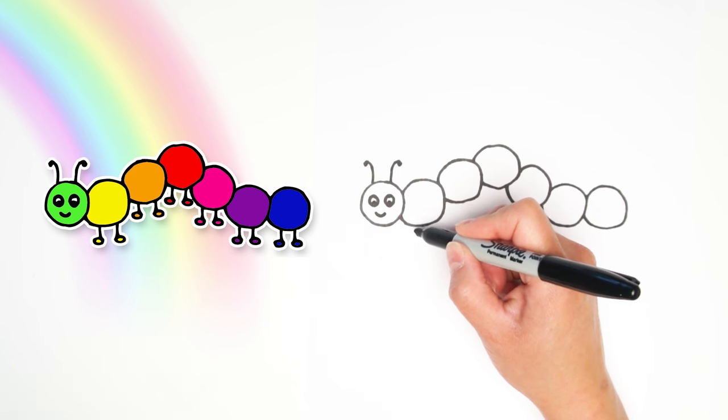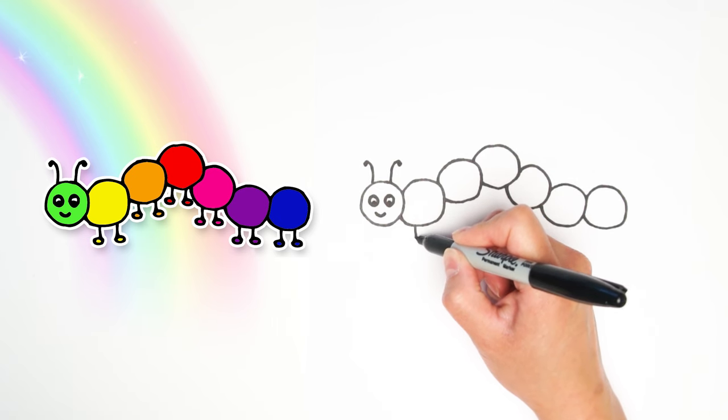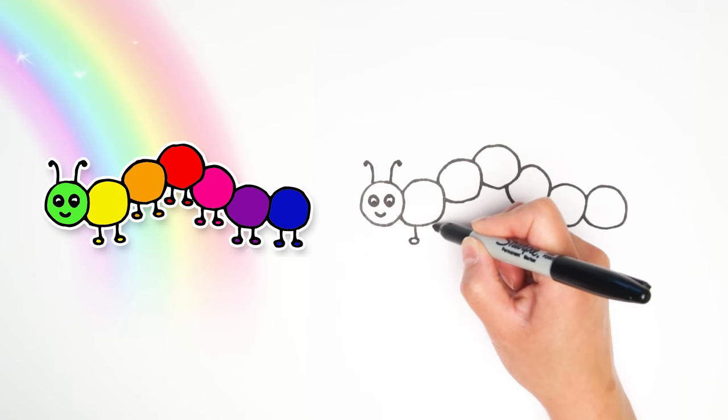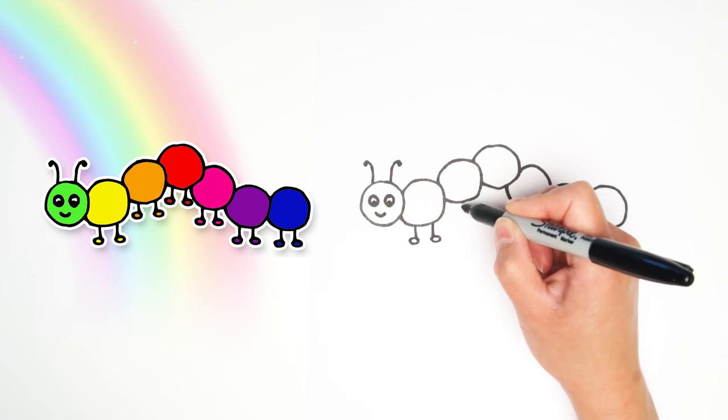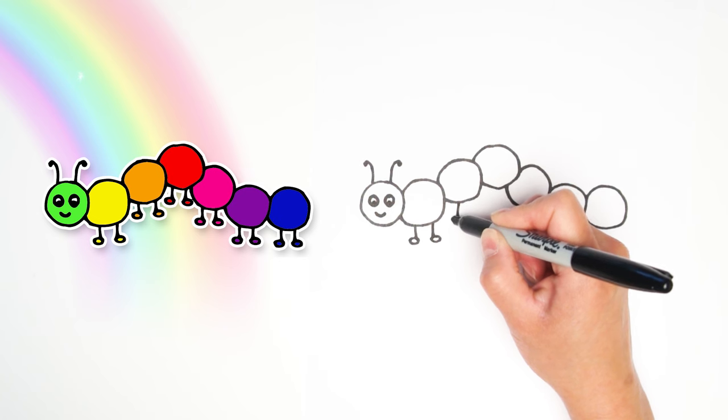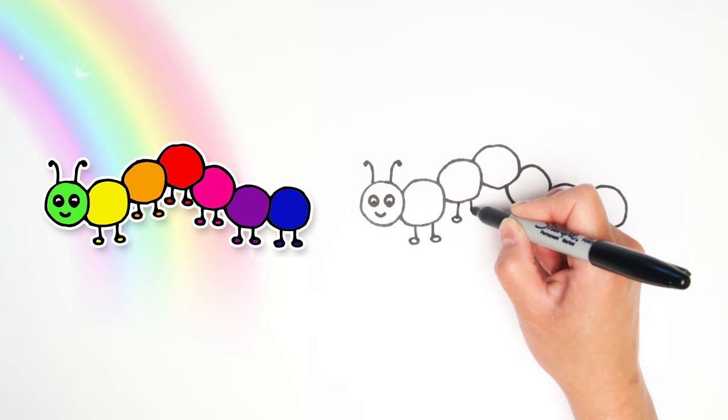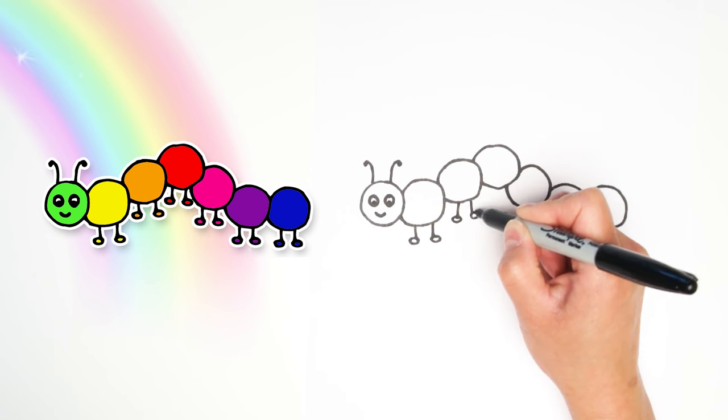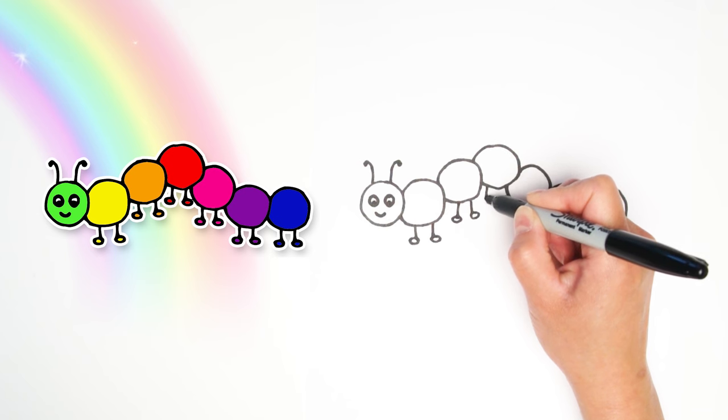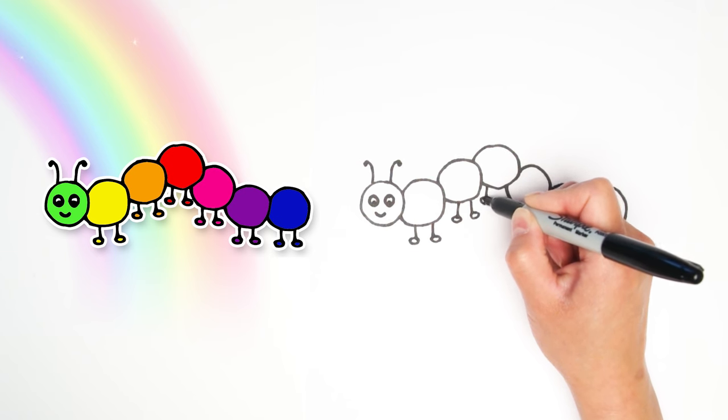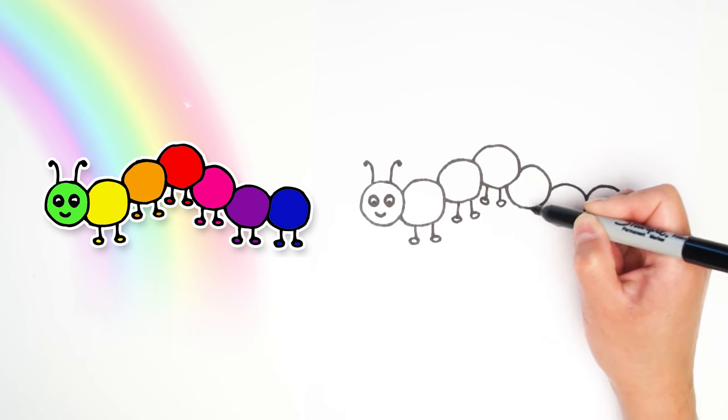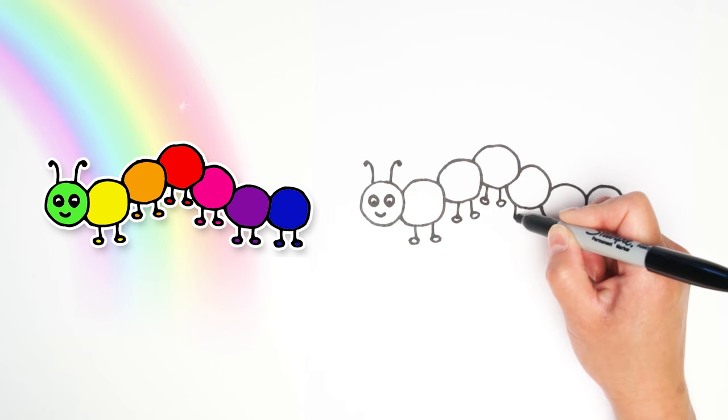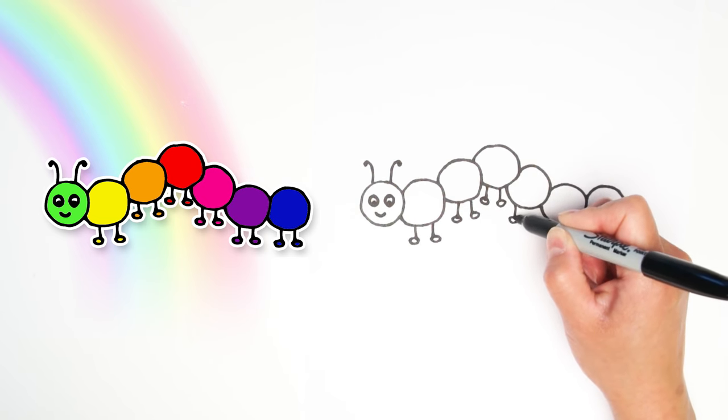We are going to add the legs to all of the body circles. A line and a little tiny oval. A line and a little tiny oval. Just keep doing that. A pair of legs for every body circle. Keep going. A little line and a little oval attached to the bottom for the little feet. This caterpillar has lots of little feet.